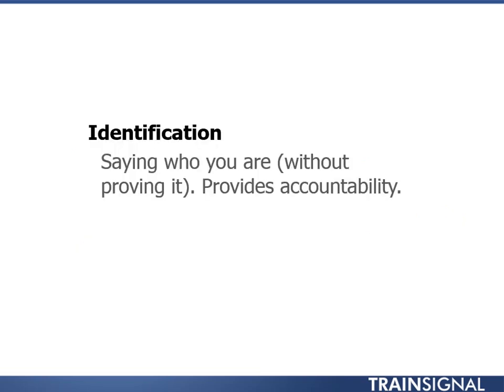Now that we've discussed the differences between subjects and objects, let's talk about identification, authentication, and authorization. The first term is identification — that's just saying who you are. There's no proof or accountability for it. I can say I'm Tony Northrup but you don't know that for sure. I've identified myself but I could be lying.